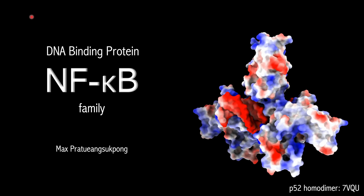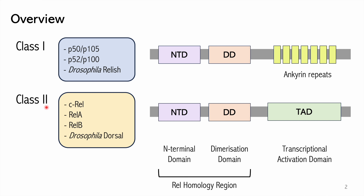The NF-κB family consists of two classes which have the rel homology region in common. It contains the N-terminal domain for DNA binding and the dimerization domain, which can mediate homo- or heterodimerization